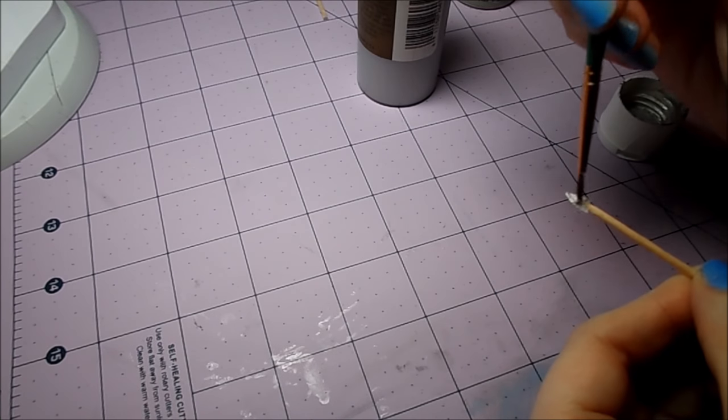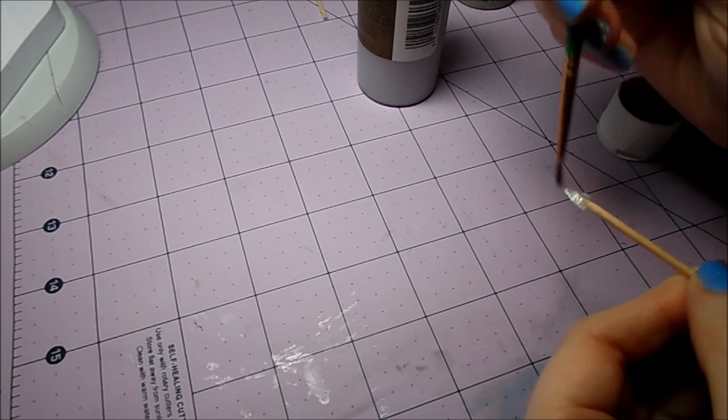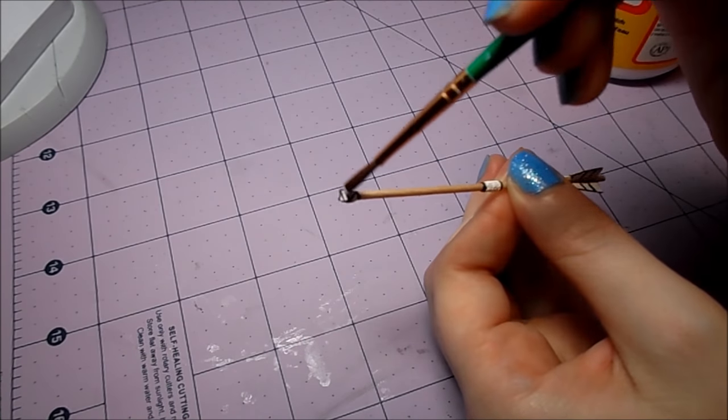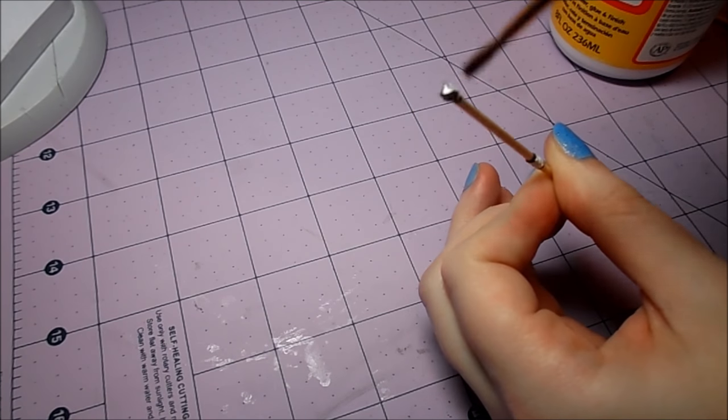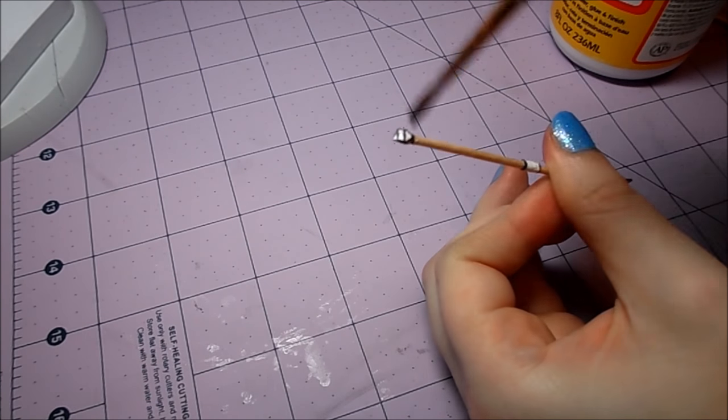You could paint the shafts of the arrow too if you wanted to. After the arrows are painted, apply another layer of Mod Podge to all of the painted areas to protect your paint from chipping.